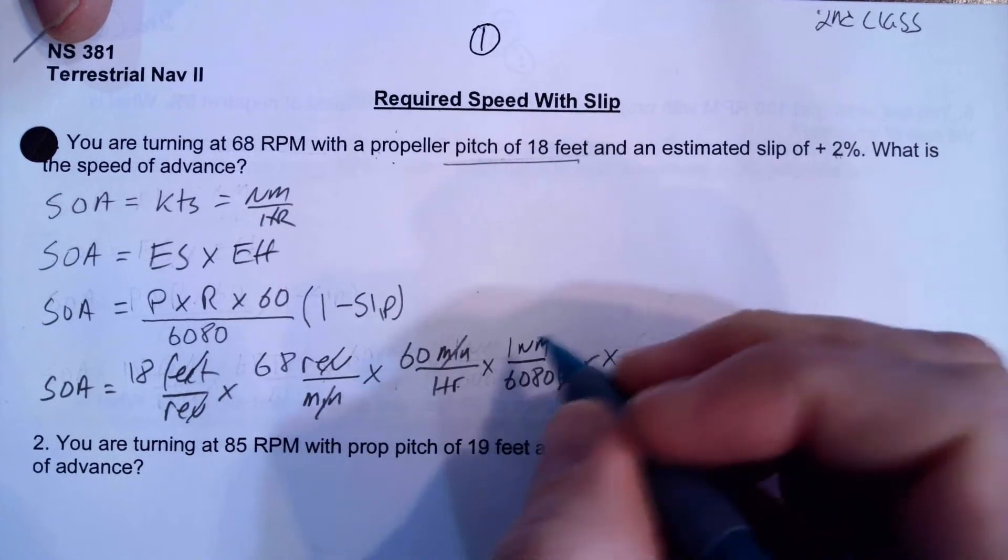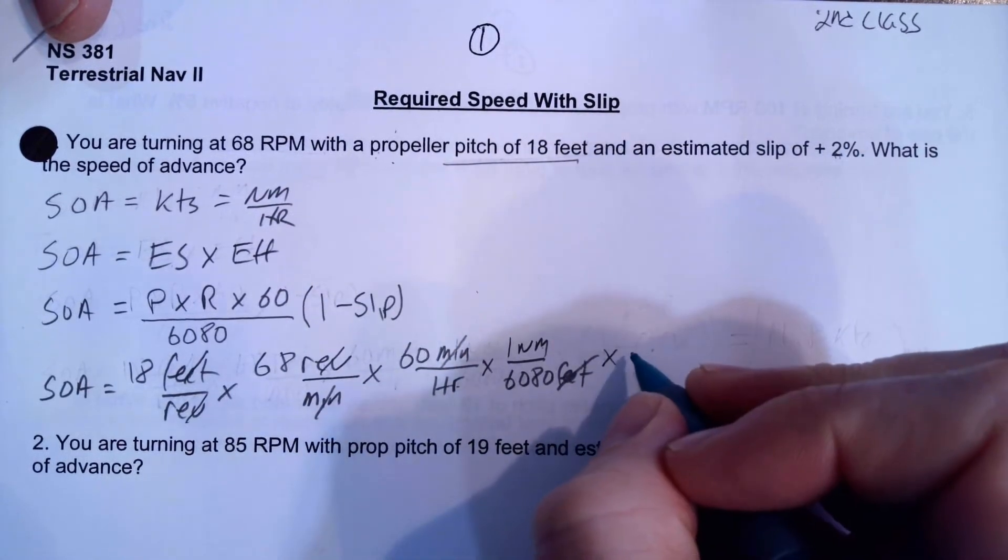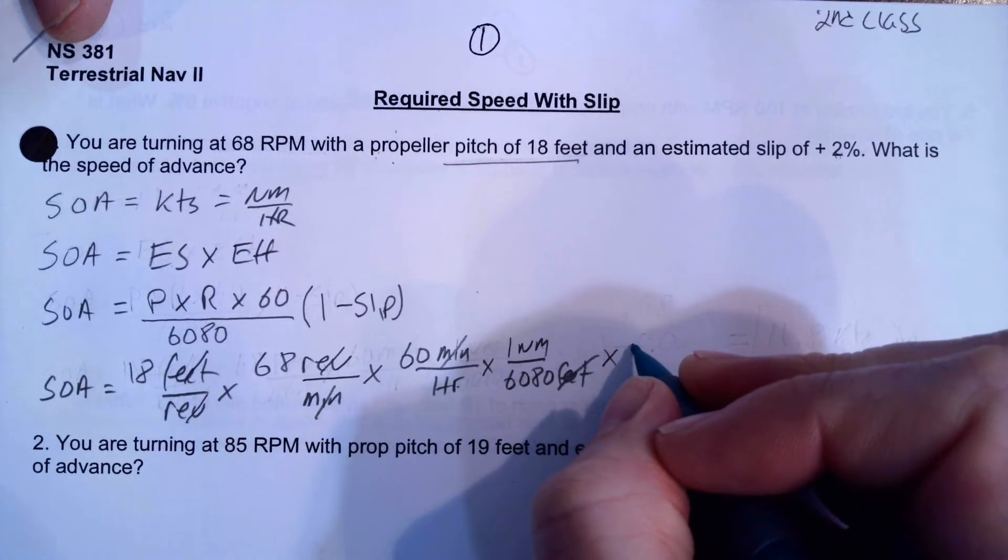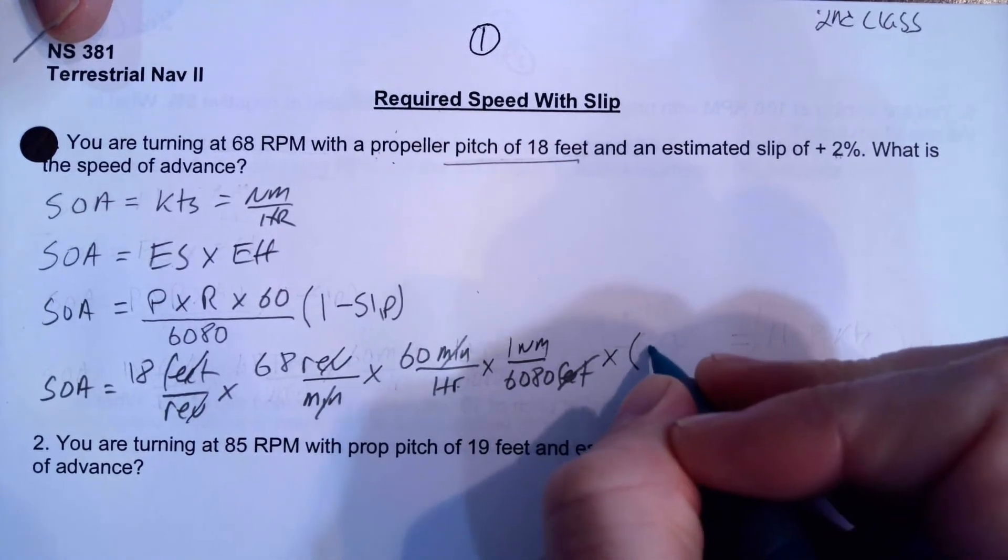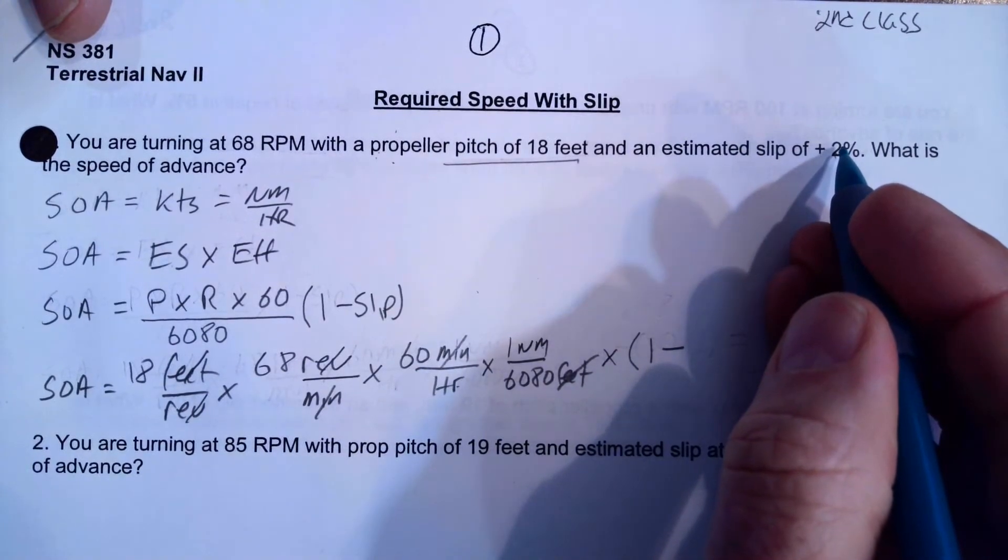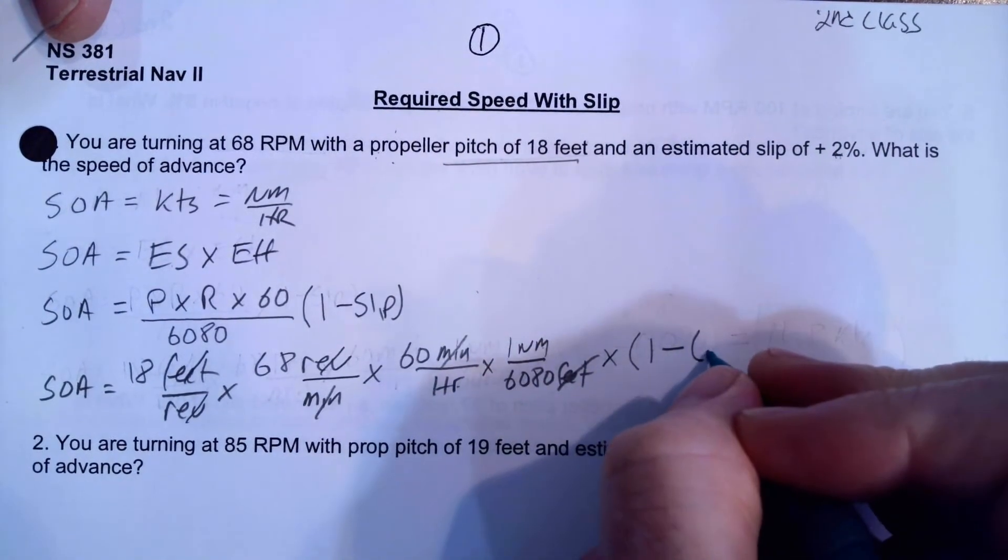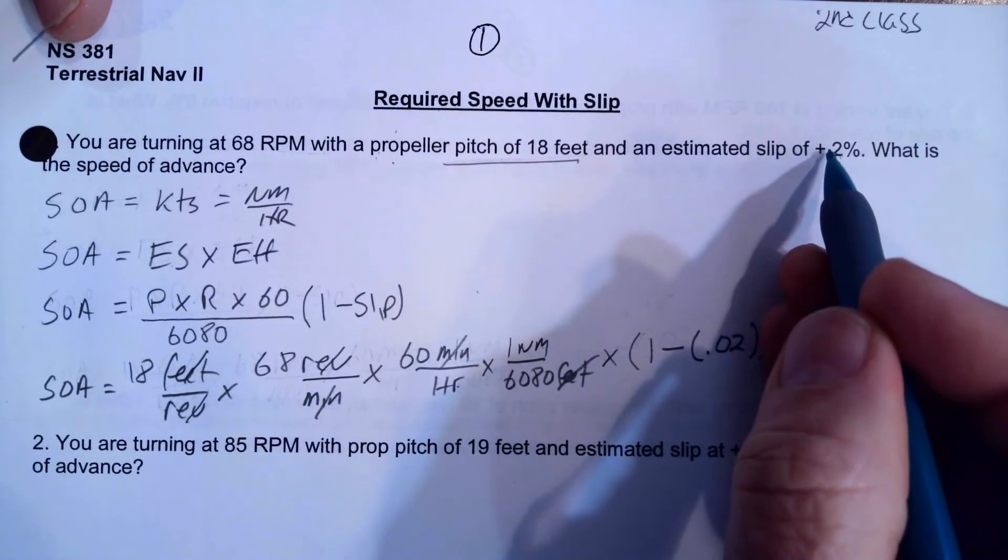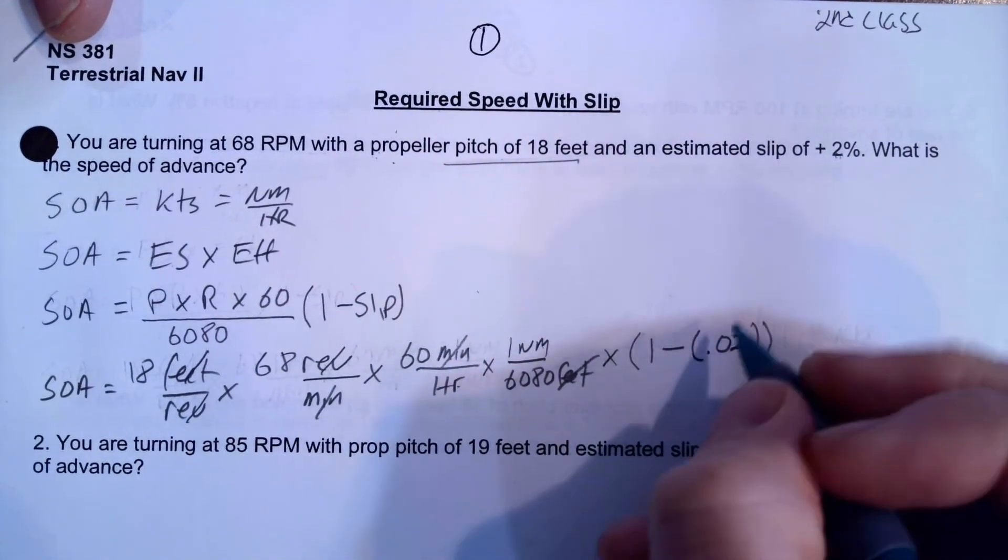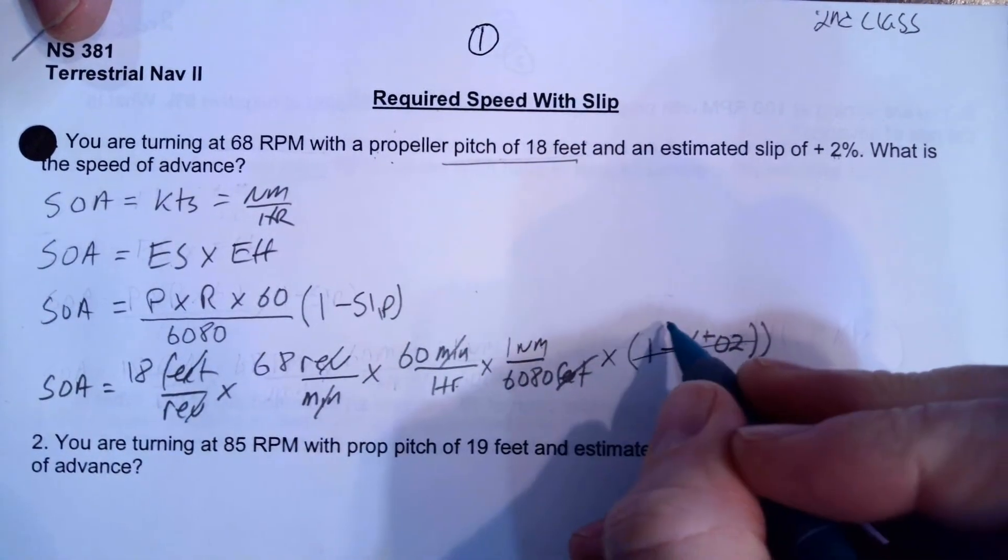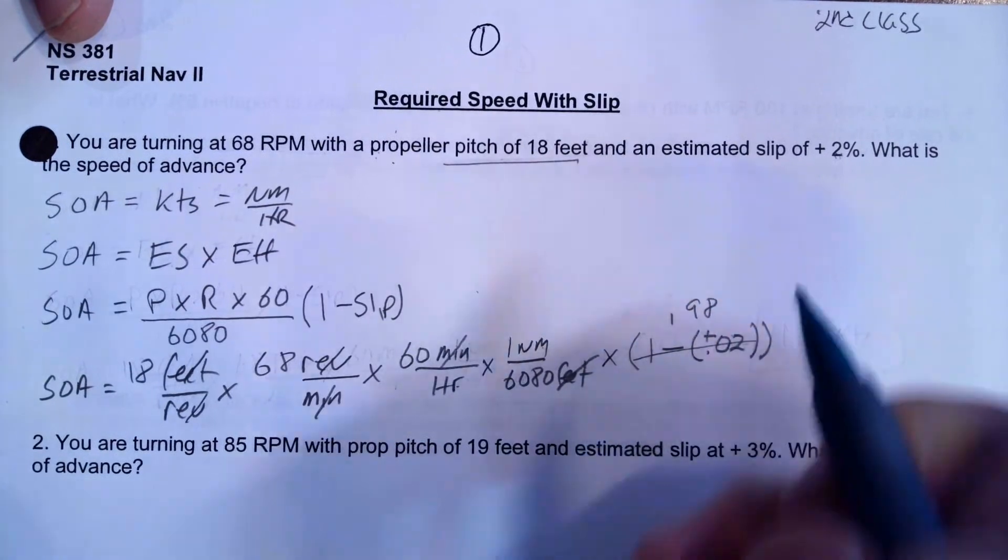Now we're going to multiply that by our actual efficiency. So that's going to be 1 minus, I'm going to convert this, 2% into a decimal, 0.02. And that, that is a positive slip, so that's going to be a plus. So 1 minus 0.02 becomes 0.98.